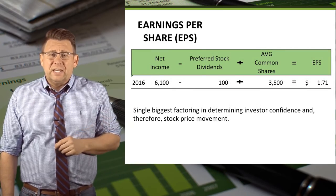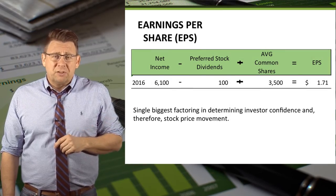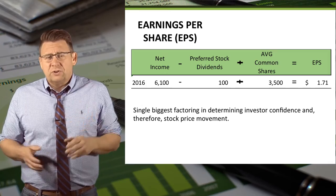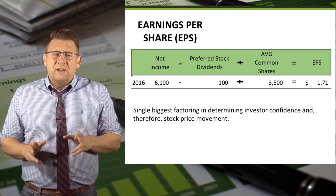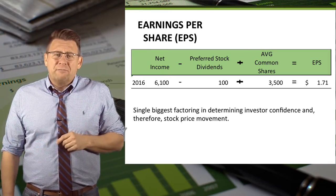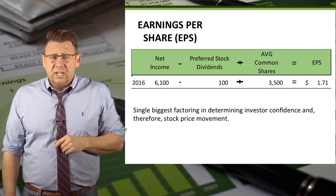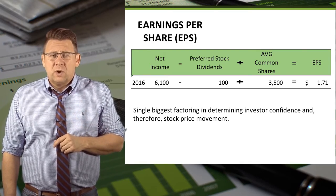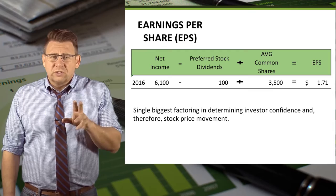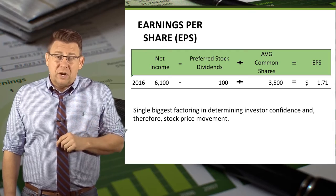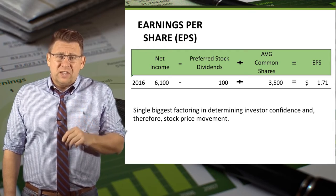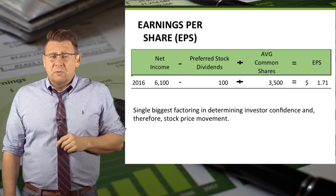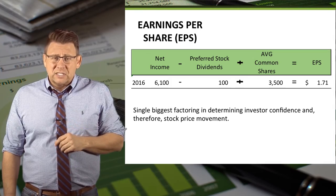So for 2016, net income minus preferred stock dividends — which I've assumed to be $100 in this example — divided by the average common shares outstanding gives us earnings per share of $1.71. This result is often compared with others in the industry, as well as what stock market analysts predicted.